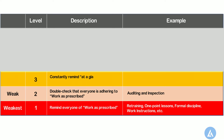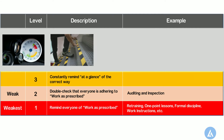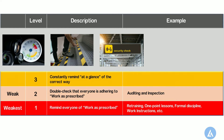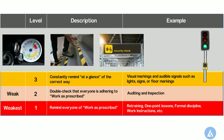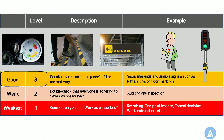Level 3: Constantly remind at a glance of the correct way. This is considered a better countermeasure compared to levels 1 and 2. At this level, the focus is on making the action or results more visible so anyone can understand the status. Examples include visual markings and audible signals such as lights, signs, or floor markings. Traffic signals also come under this level. This is a better level of countermeasure but still has a lower impact on elimination or reduction in frequency of the problem, and is therefore highlighted in orange.